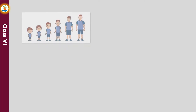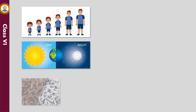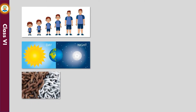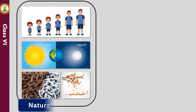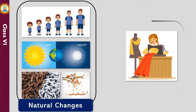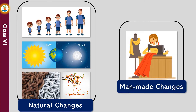Many changes taking place around us occur by themselves — growing up of living things, occurrence of day and night, rusting of iron, and shedding of leaves by plants. Such changes are called natural changes. The changes that are brought about by humans are called man-made changes. Making a dress by cutting and stitching a fabric is an example of man-made changes.